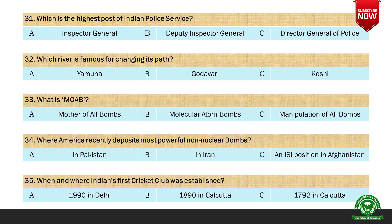Next question: When and where was India's first cricket club established? Options are A. 1990 in Delhi, B. 1890 in Calcutta, and C. 1792 in Calcutta. And the right option is C. 1792 in Calcutta.